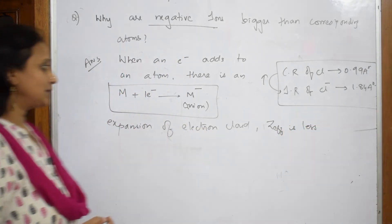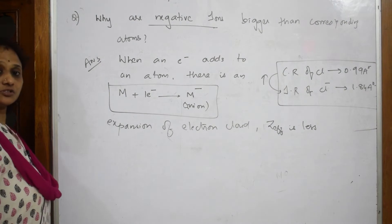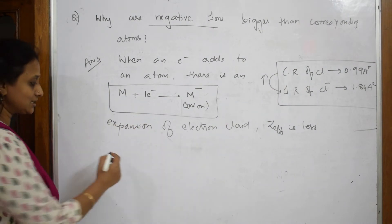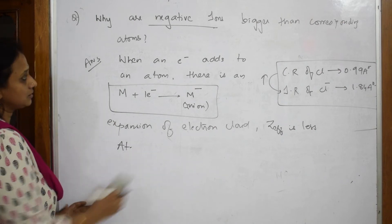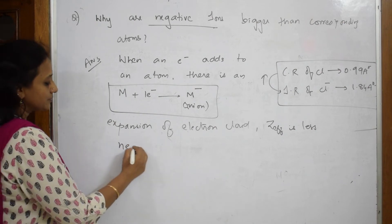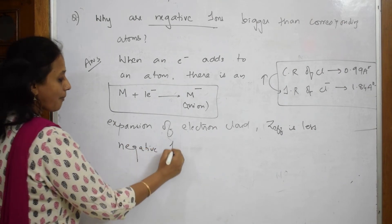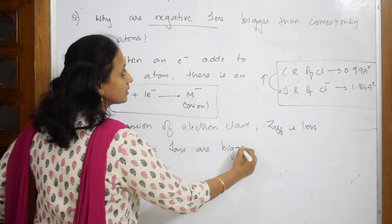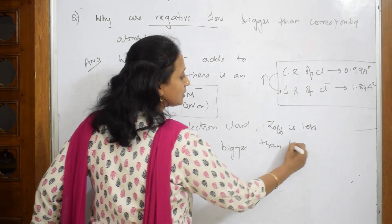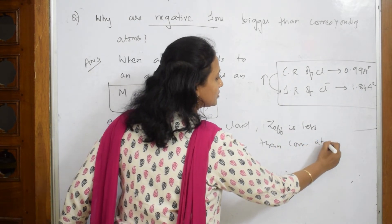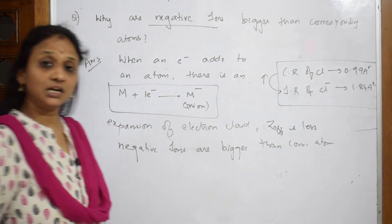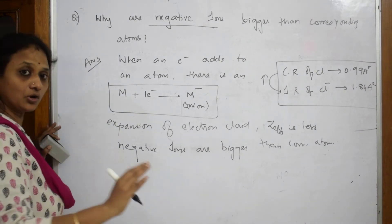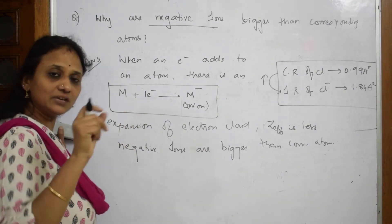Right. So because of this expansion of electron cloud, or Z effective, the effective nuclear charge is less. Negative ions are bigger than the corresponding atom. This is a simpler way to write. Now, how will you justify? How will you write in the form of order? Always you need to write an order, give an example.